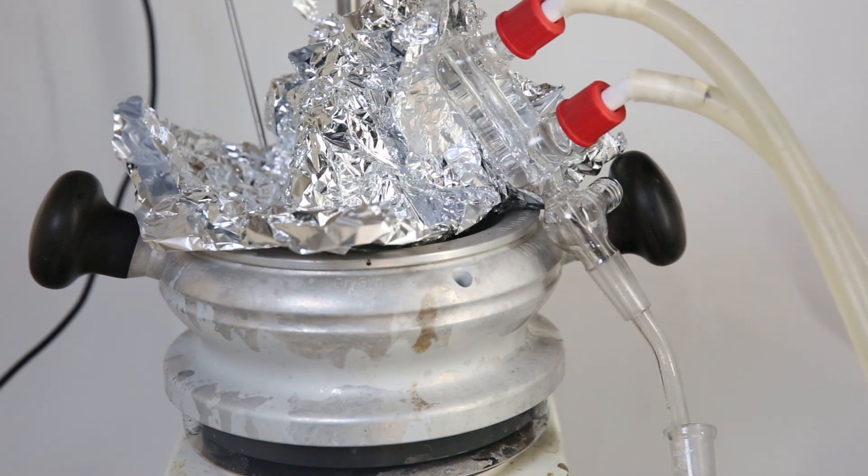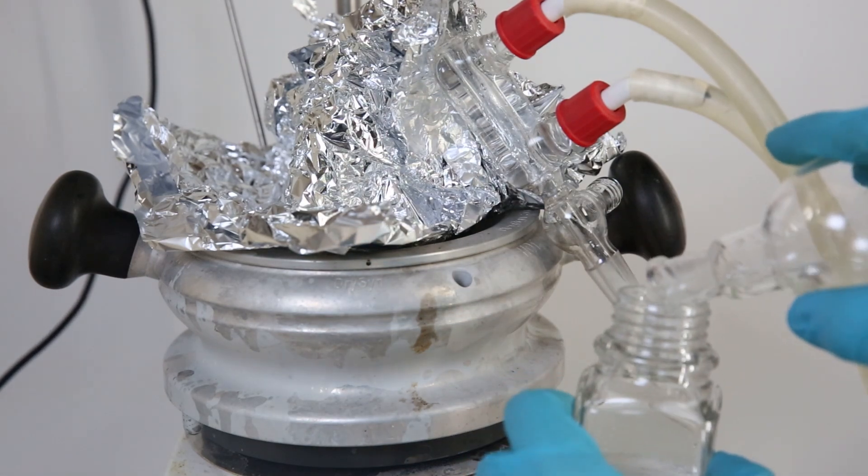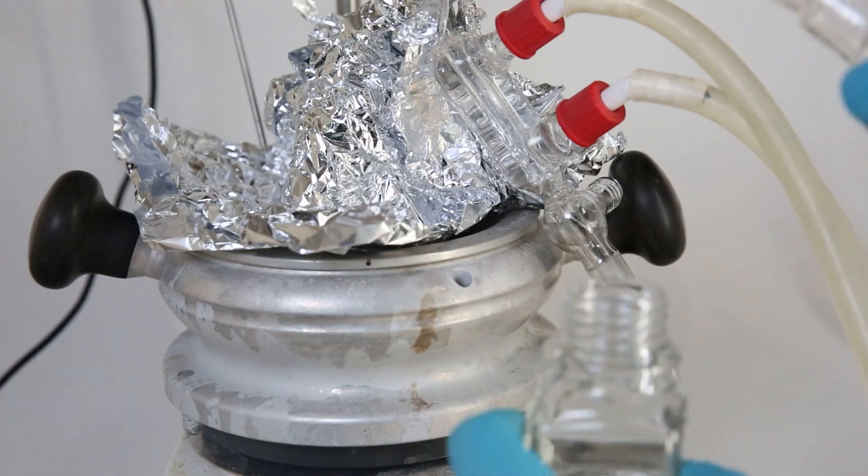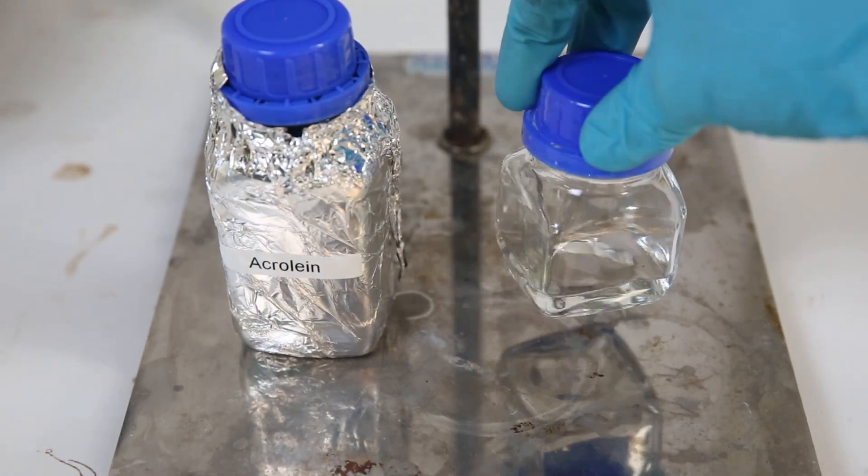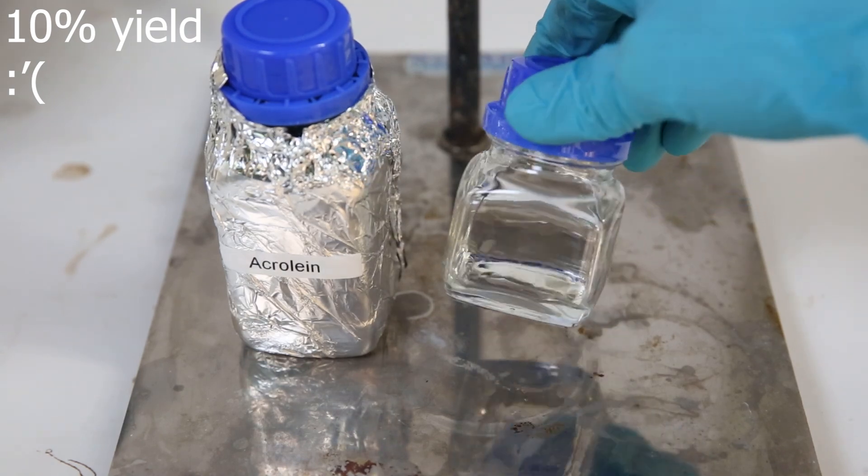When the temperature started to increase past that, I poured the contents out into a bottle containing some hydroquinone. So the final yield of Acrolein is a sad 10%. But at least I also have a bunch of tar.